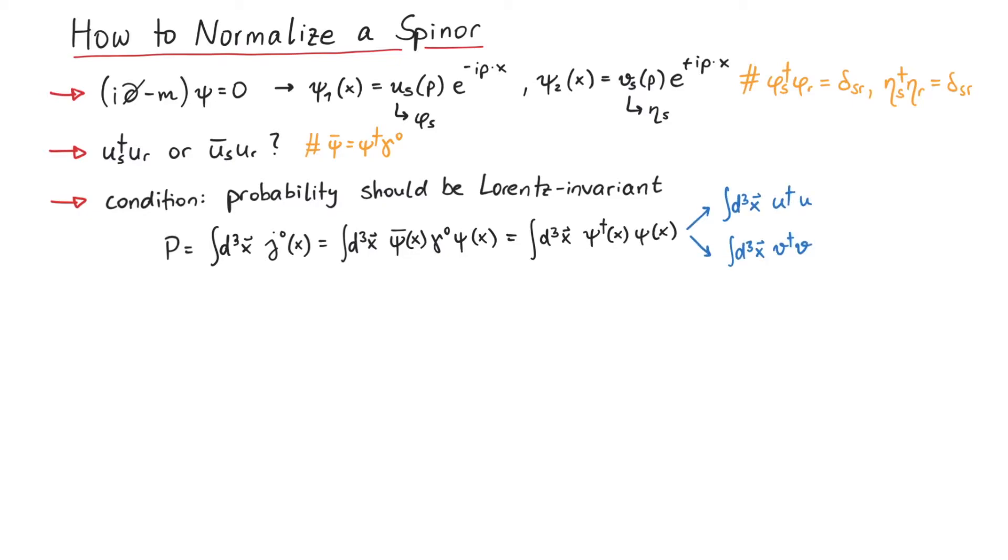We see that the probability is the integral d3x over psi dagger psi. Now d4x is Lorentz invariant, but d3x surely is not, at least as far as boosts are concerned. But here's a quick way to fix this.